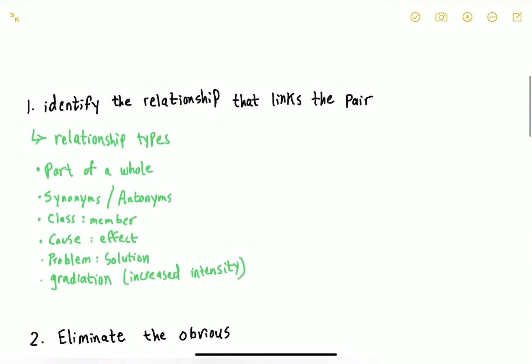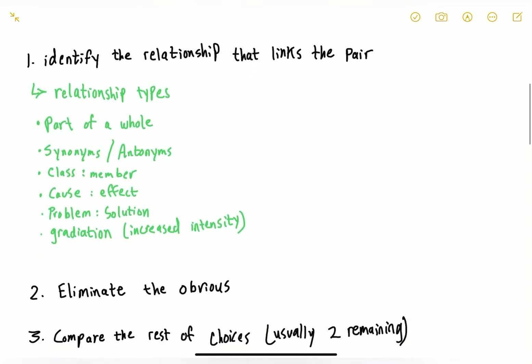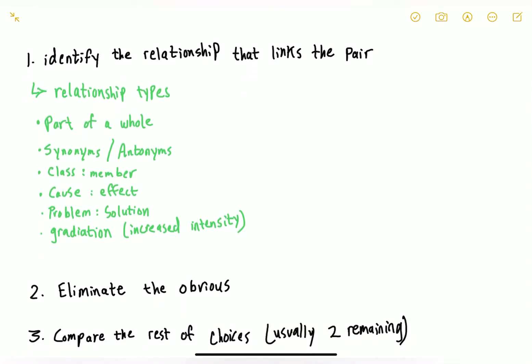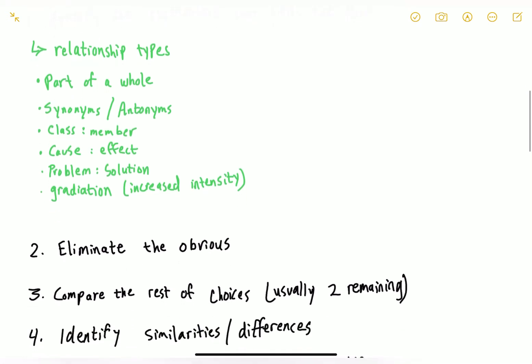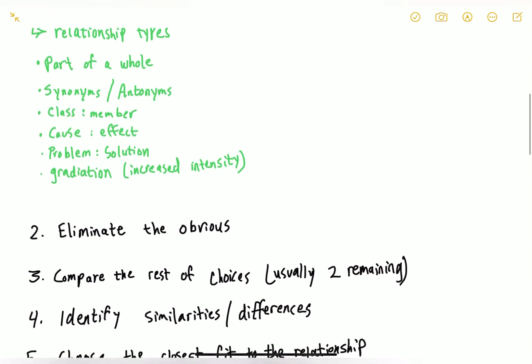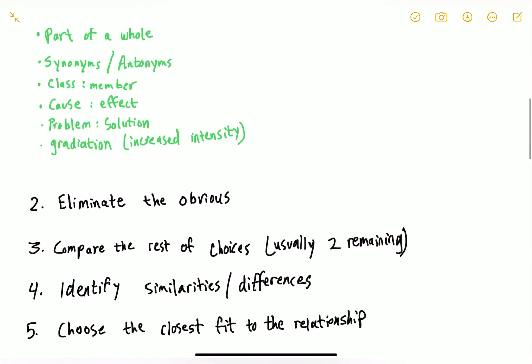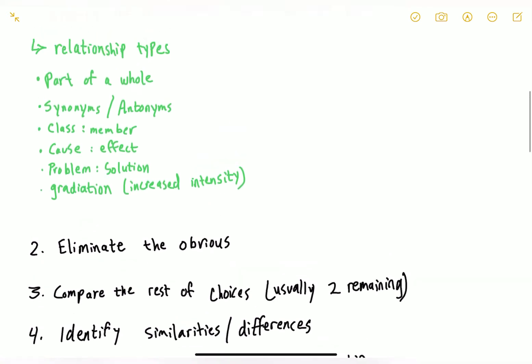Now let's move on to number two. This is a set of steps - you do step one, step two, step three, step four, and step five in order to reach the answer. Step two is to eliminate the obvious choices. Step three is to compare the rest of the choices, and usually you would have two choices remaining. Step four, you identify the similarities and differences, and step five is to choose the closest fit to the relationship.